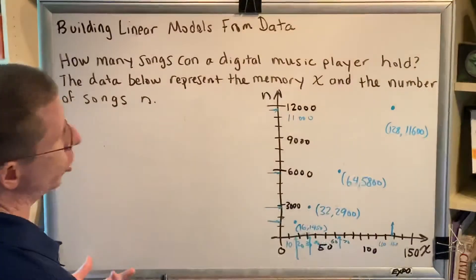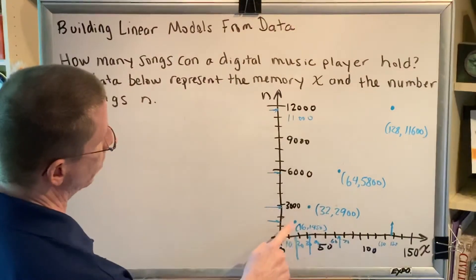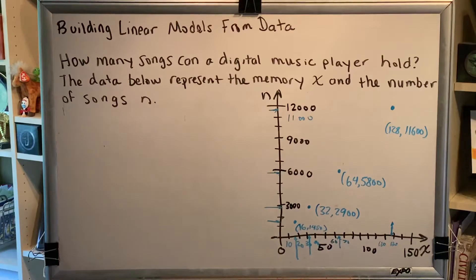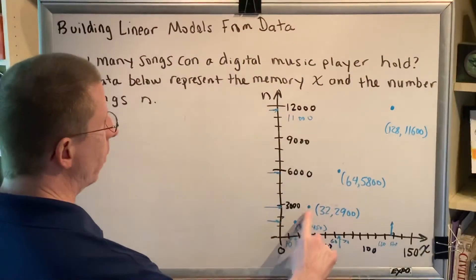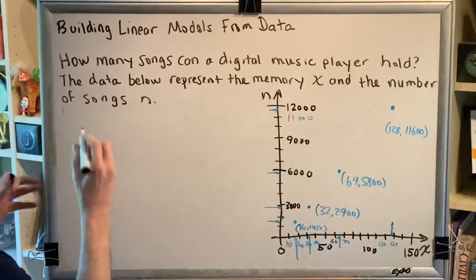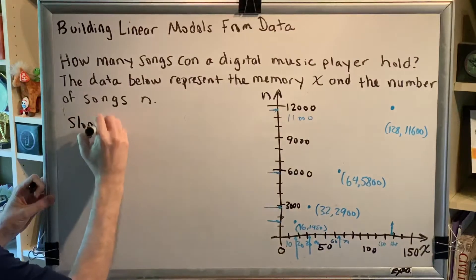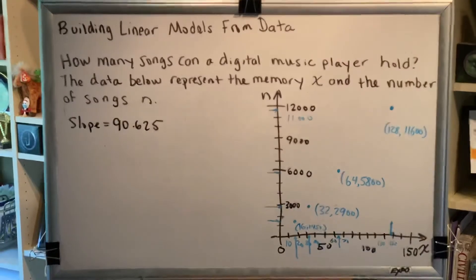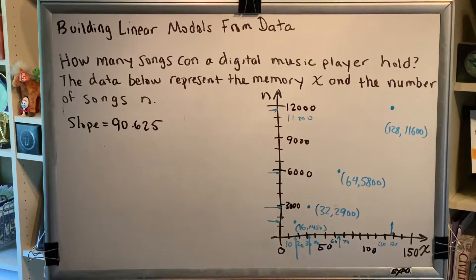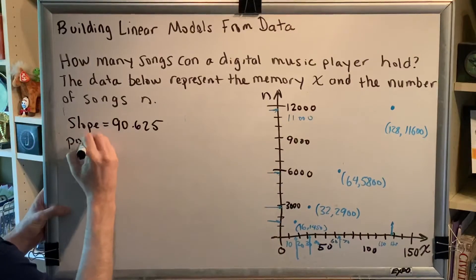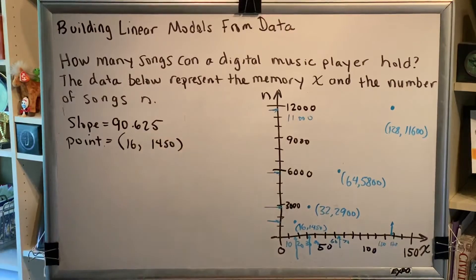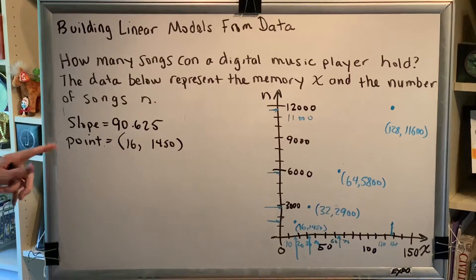So let's go ahead and do that. The first thing you want to do is pick two points. Let's say we did these two right here because the numbers are the smallest. To write the equation of a line, you need to know two things: the slope of the line and a point on the line. Well, good news. In Part B, we already found the slope of the line that goes through these two points, and we found that that slope was equal to 90.625. So in order to write the equation of our line, now we just need to pick one of the points. And again, we'll pick the one with the smallest numbers. So the point we're going to use is 16, 1450. We're now ready to write the equation of our line. We have a point and a slope.